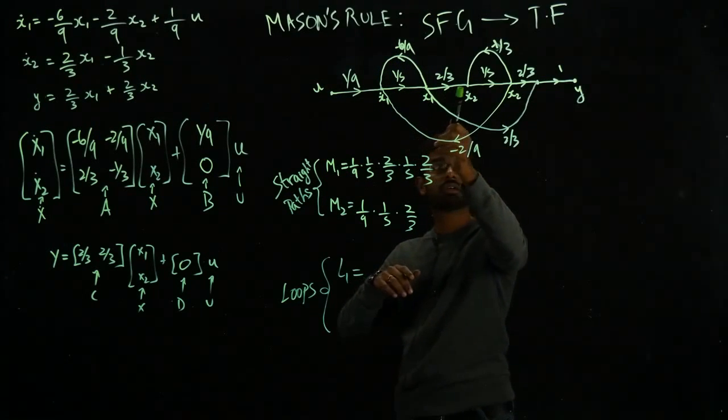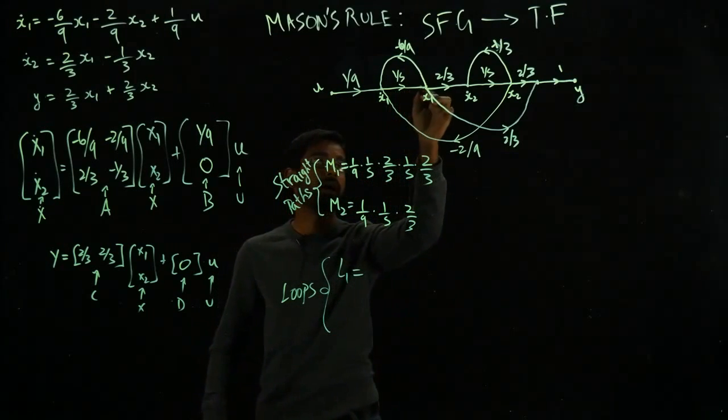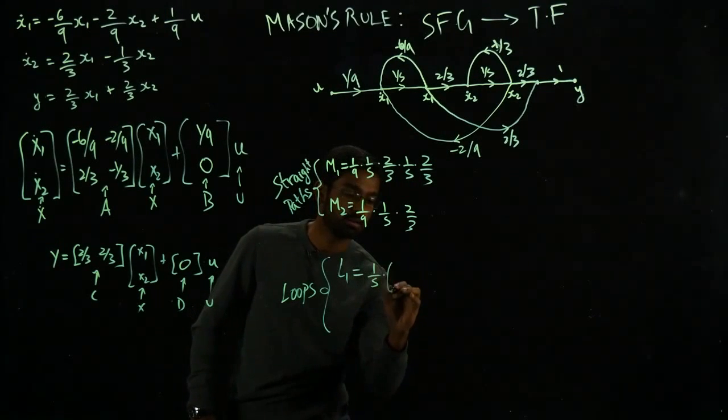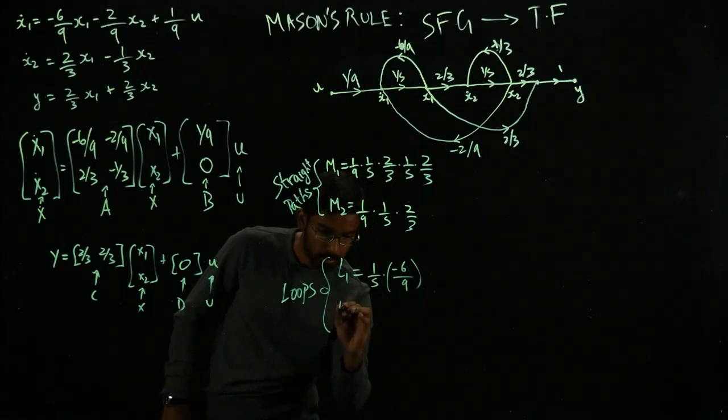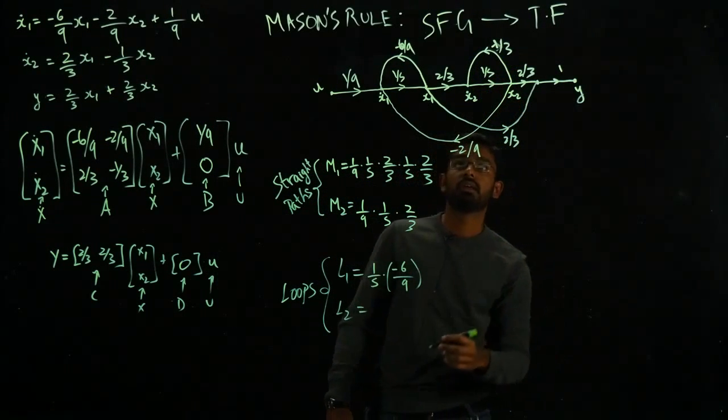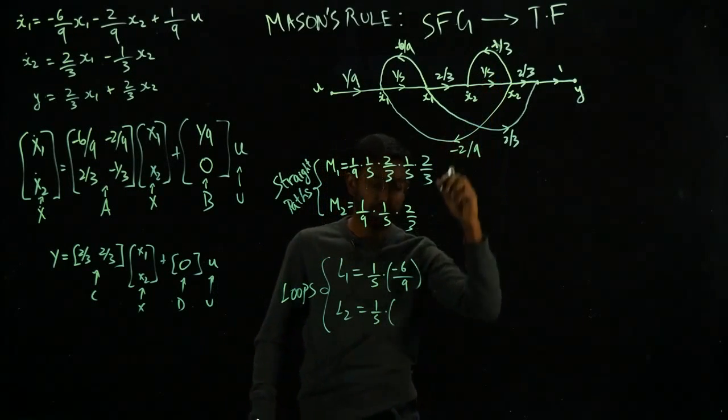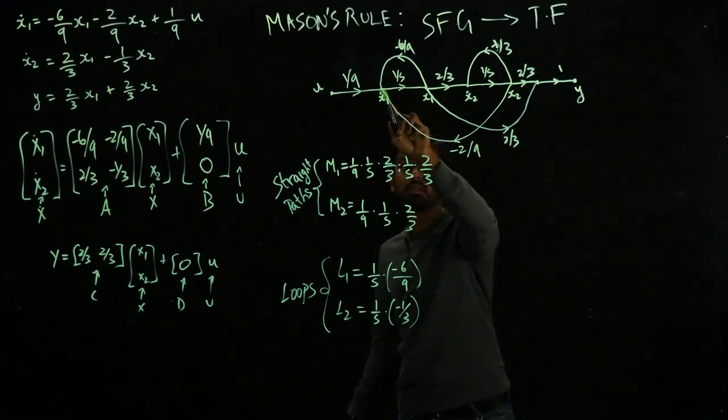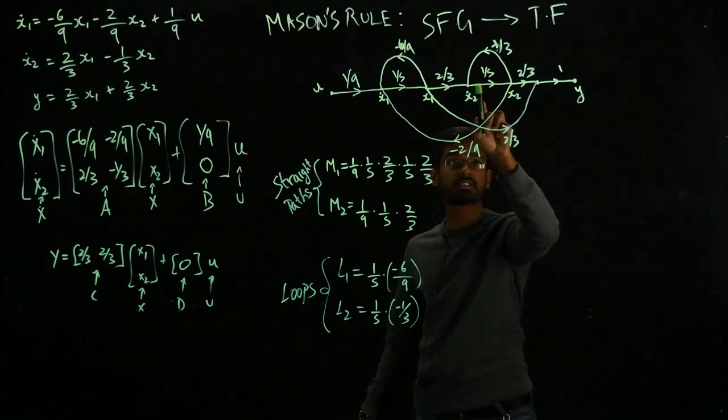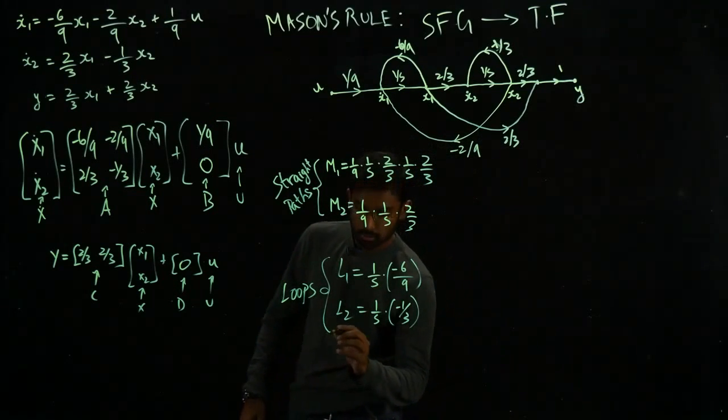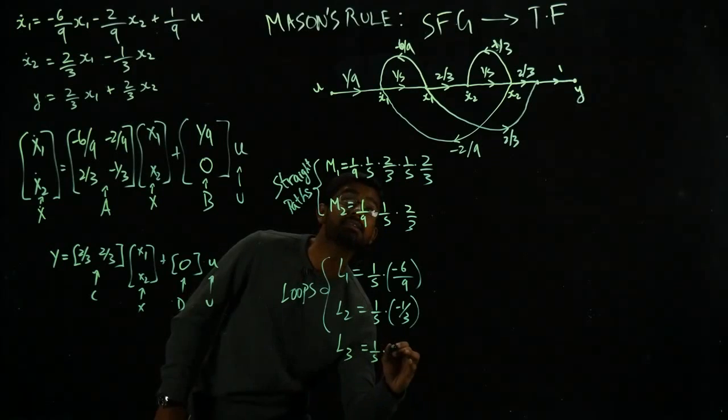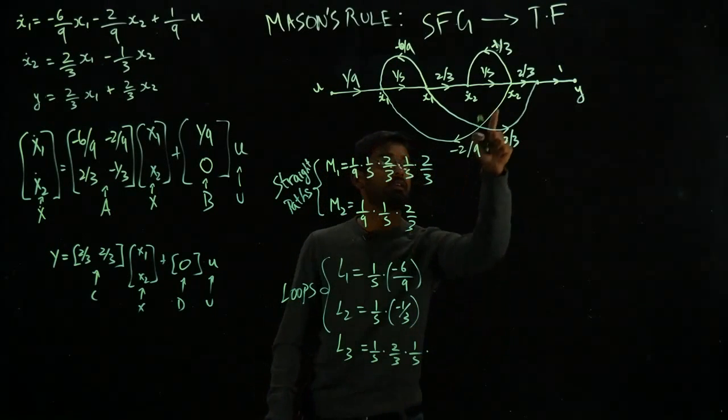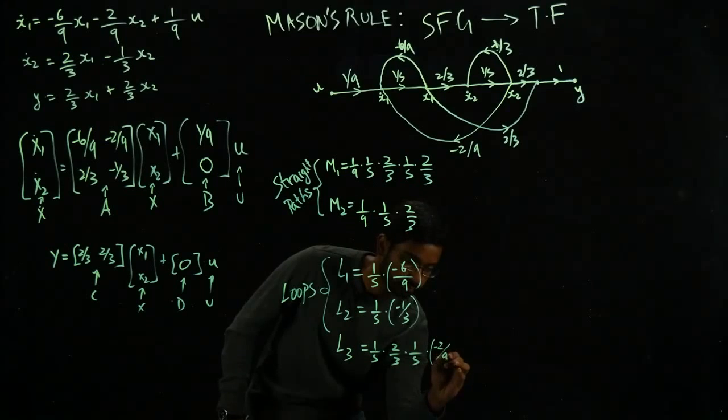Very simple. First loop. This is another loop. So let me just write it one by one. I'm going to be considering this guy. If I need the gains of this guy, it's simply going to be 1 over S times minus 6 over 9. What about L2? This guy. It is similarly 1 over S times minus 1 over 3. There is another loop here, which is this loop. X1 dot, X1, X2 dot, X2, and then all the way back to X1 dot. So loop 3 would be 1 over S times 2 over 3 times 1 over S times and then minus 2 over 9.